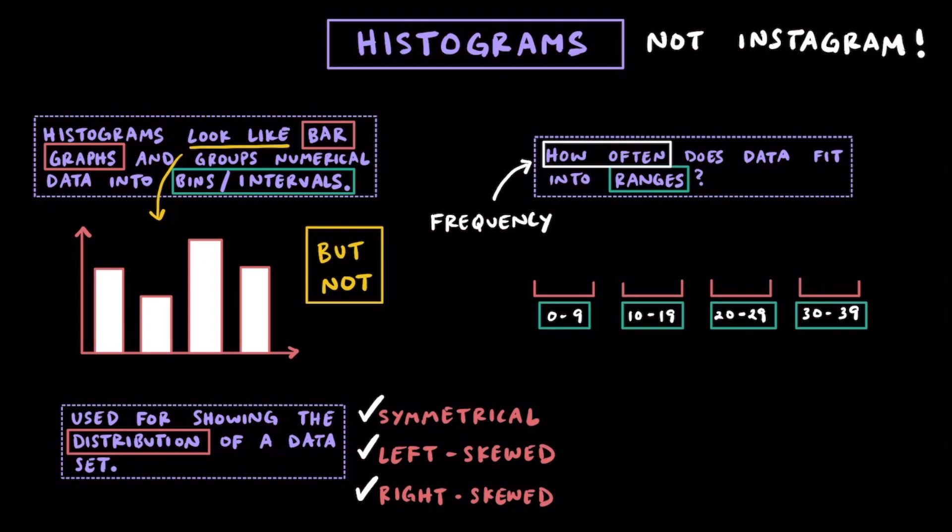Once we establish our intervals, we then want to see how often numbers will fall inside of them. For example, if we had a data set that had 8 numbers that were between 0 and 9, they would all go in the first category.